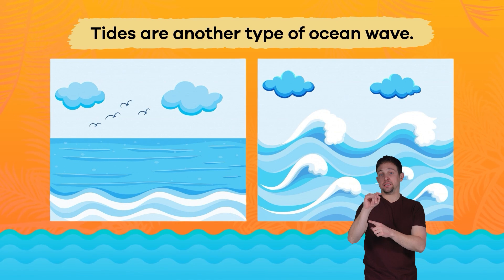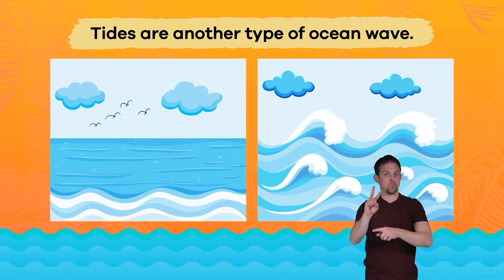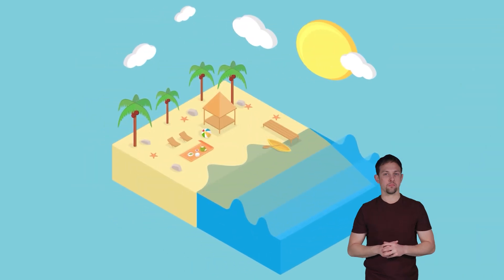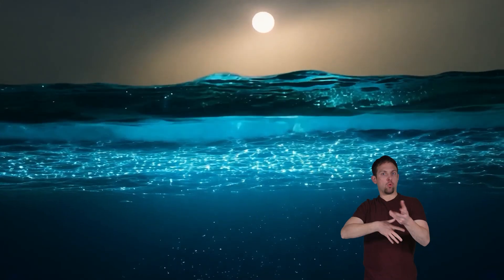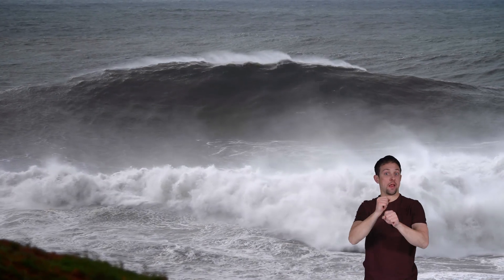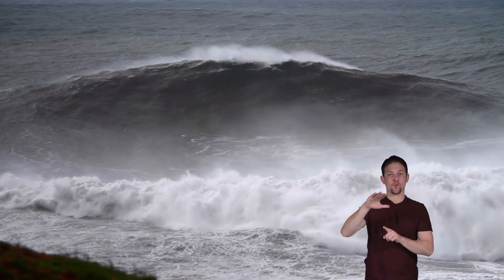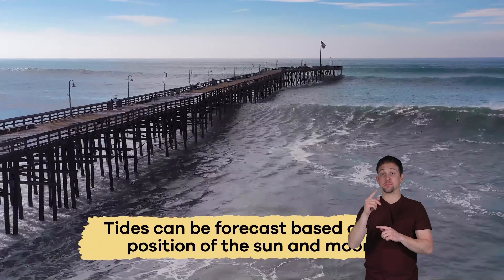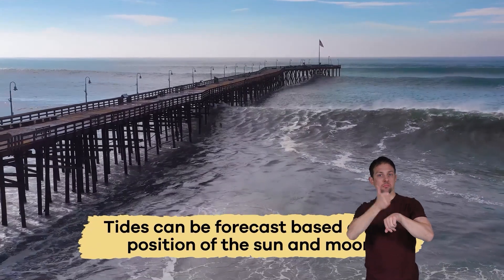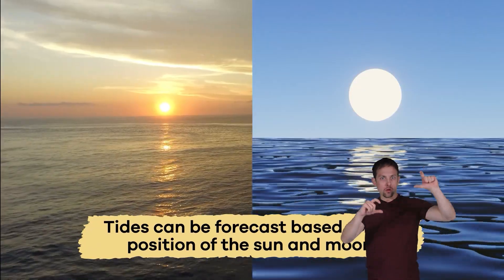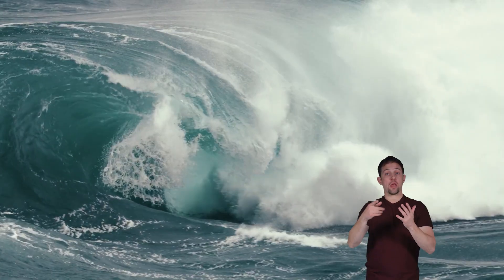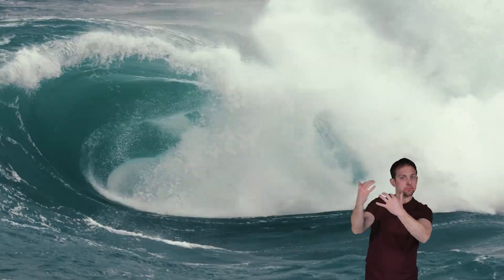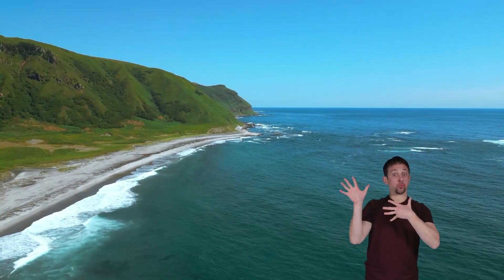Tides are another type of ocean wave. The gravitational pull of the moon and the sun causes the water in the ocean to bulge out, which creates high and low tides. Tides can be forecast based on the position of the sun and moon, and other oceanic factors, which means they are much more predictable than wind-driven waves.